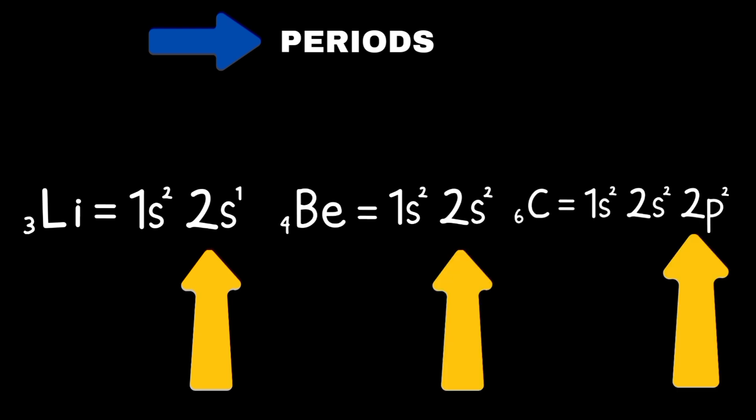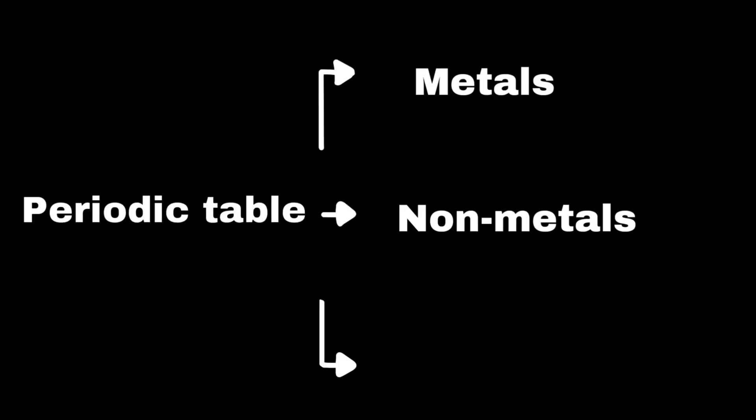The periodic table is divided into three main categories of elements, such as metals, non-metals, and metalloids.